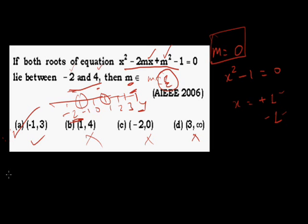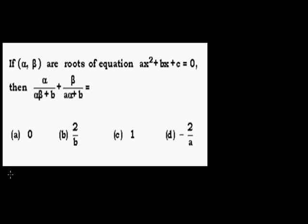Sometimes practicing an unusual way saves your time. If alpha and beta are the roots of the equation Ax² + bx + c = 0, then find the value of: alpha / (A·alpha·beta + b) + beta / (A·alpha + b).